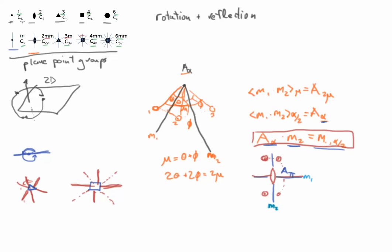The lower notation is the Schoenflies notation, more common among chemists. C refers to a cyclic point group — that is, a single rotation axis — and the subscript denotes the n-fold rotation axis, so C6 is a six-fold rotation. C-sub-S comes from the German word Spiegel, meaning mirror, and denotes a single mirror plane. The V in C2V, C3V, C4V, C6V denotes a vertical mirror plane — one in which the rotation axis lies within the mirror plane.